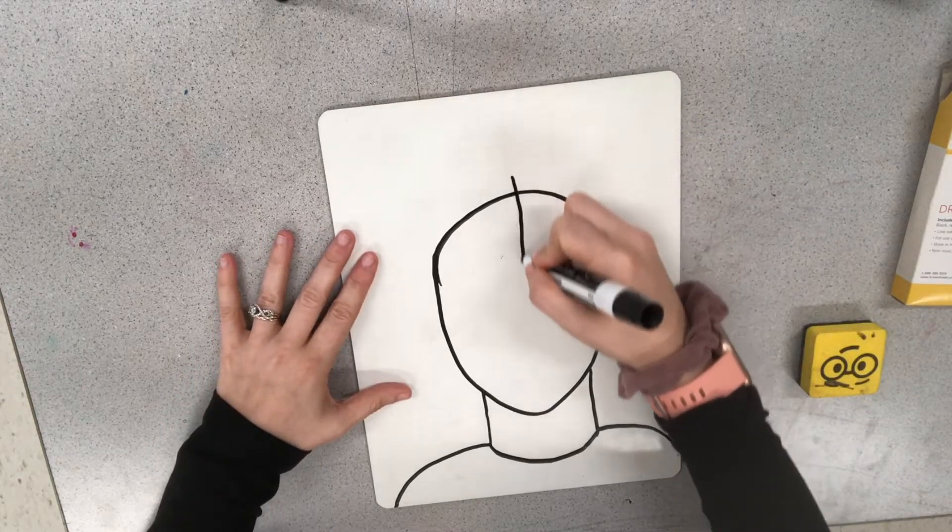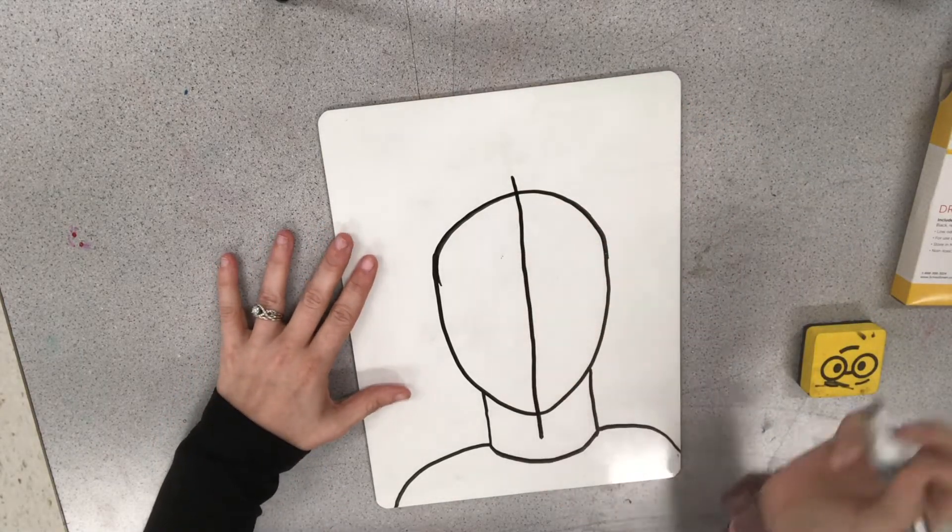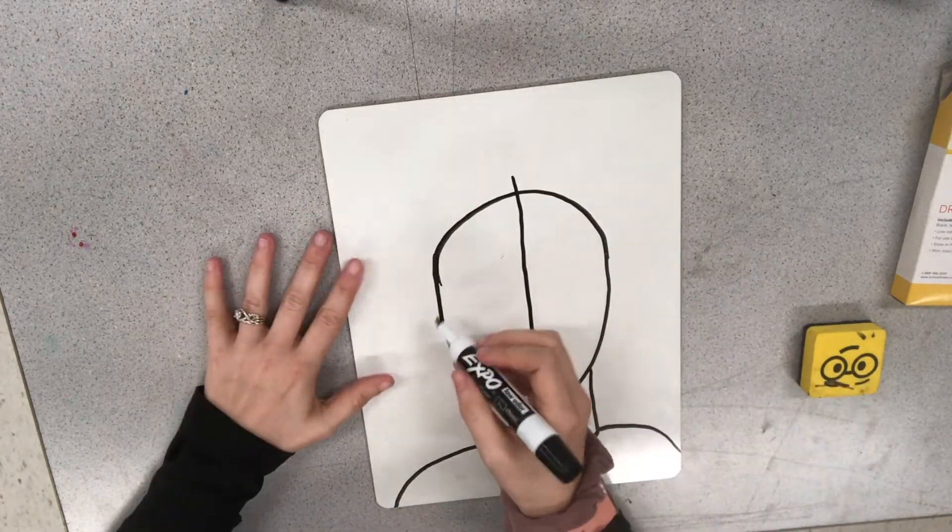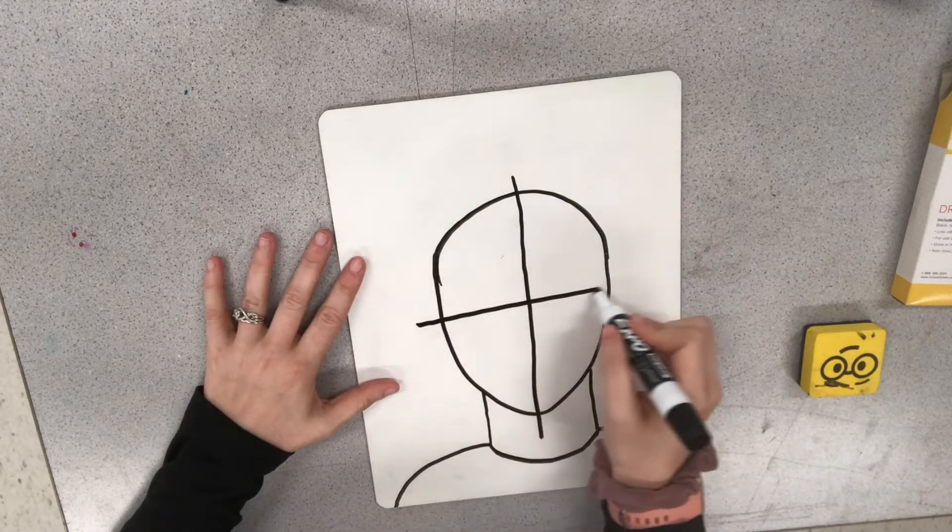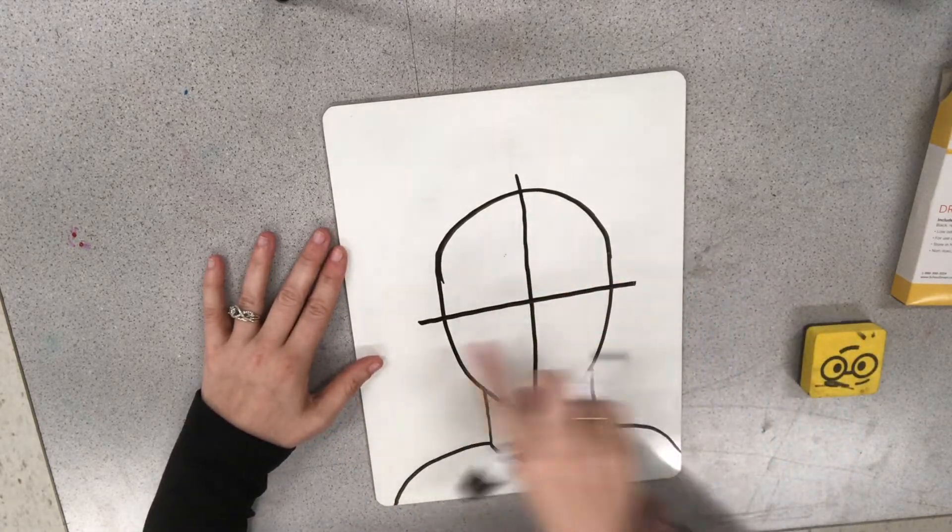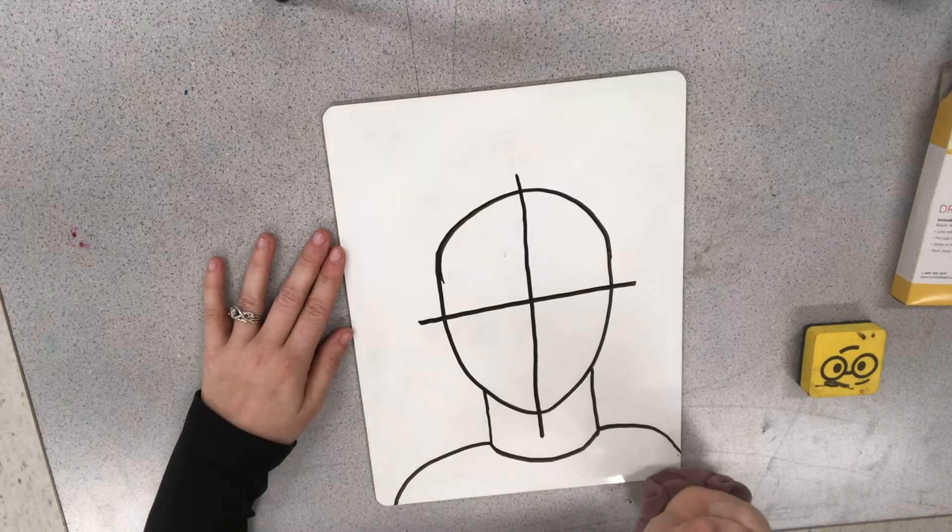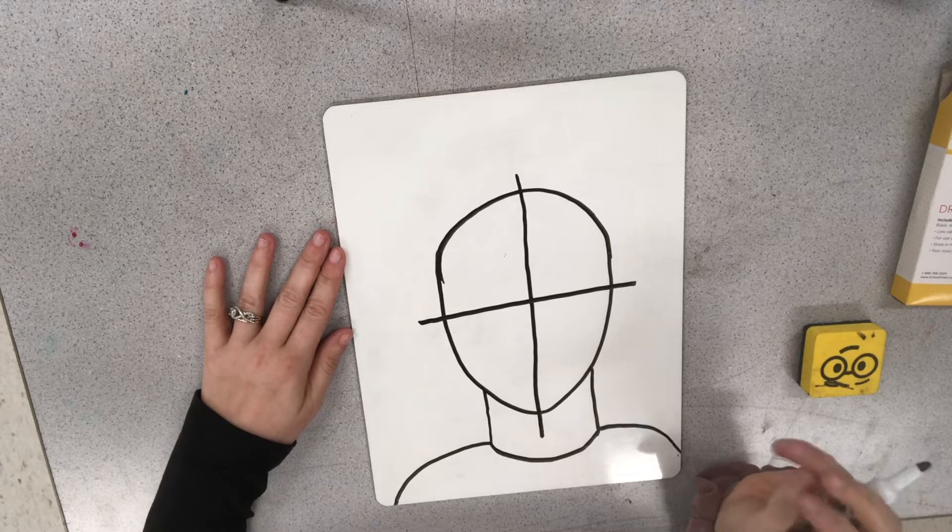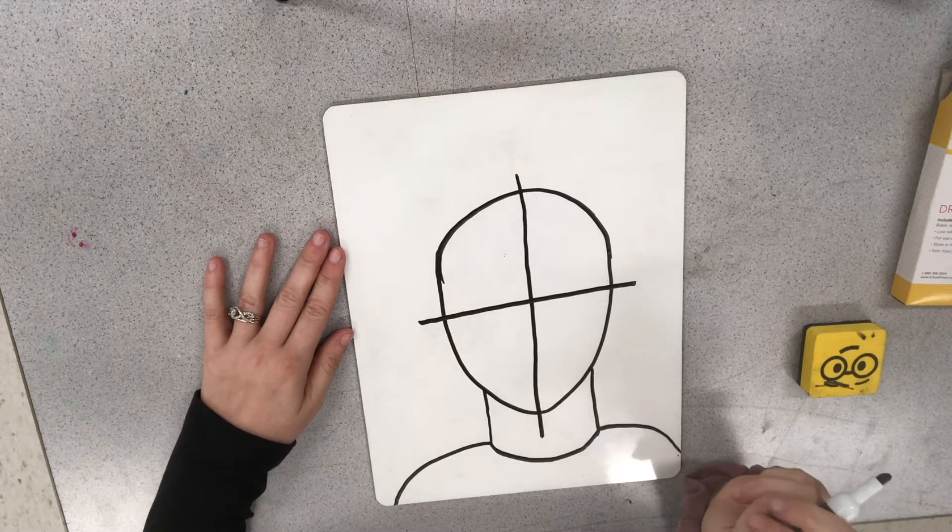So we are going to actually make a line going down the center of your face right down the middle and then a line going across down the center of the face as well. So we have this like T shape going through our face. And like I said draw that really lightly. These are just guidelines. These are going to show us where everything goes on our face.